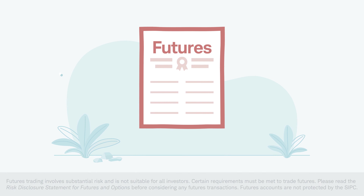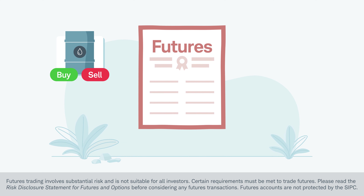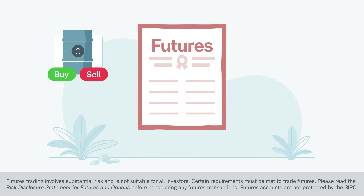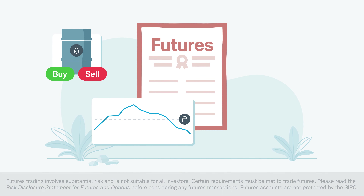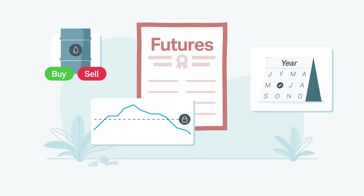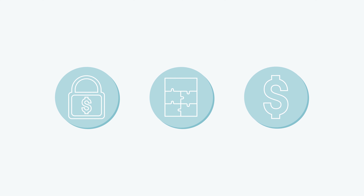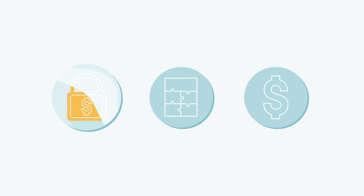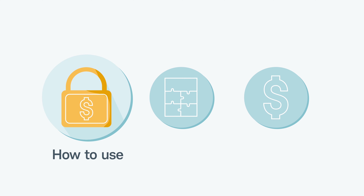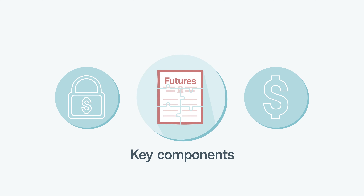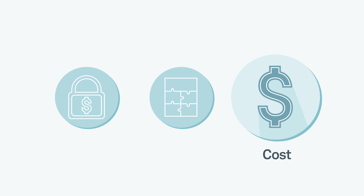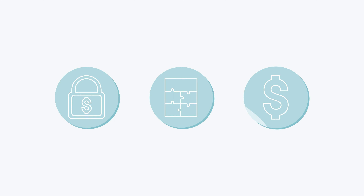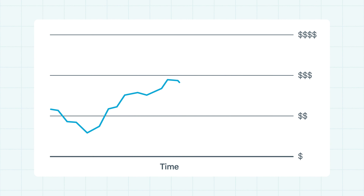A futures contract is an agreement to buy or sell a specific amount of a commodity or financial instrument at a specific price on a specific date in the future. To help you understand why businesses and individuals trade futures, let's examine how futures contracts can be used, the key components that make up a contract, and how much it costs to trade a futures contract. One use of a futures contract is to allow a business or individual to navigate risk and uncertainty.